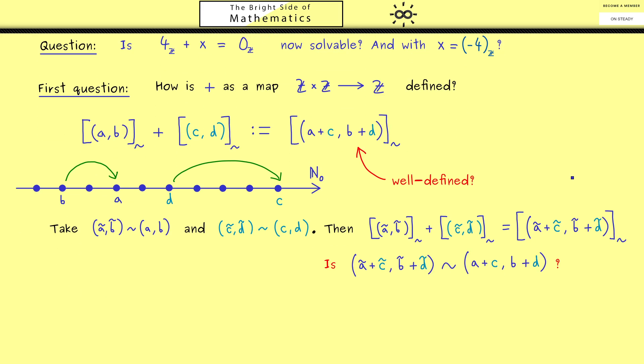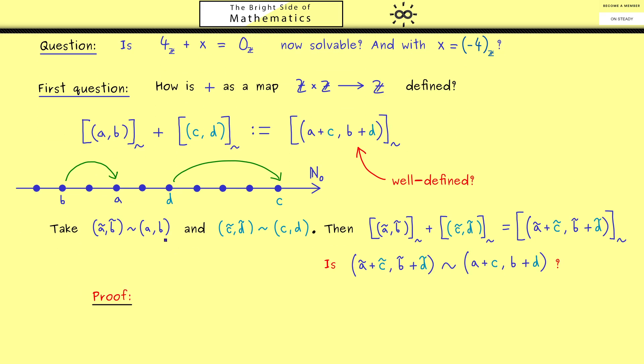Let's write down a proof. First, you should see we use these two equivalences here as the assumptions. However, you already know what they mean. The first one would say ã + b = a + b̃, and in a similar way for the other ones. And now we can just put both things together.